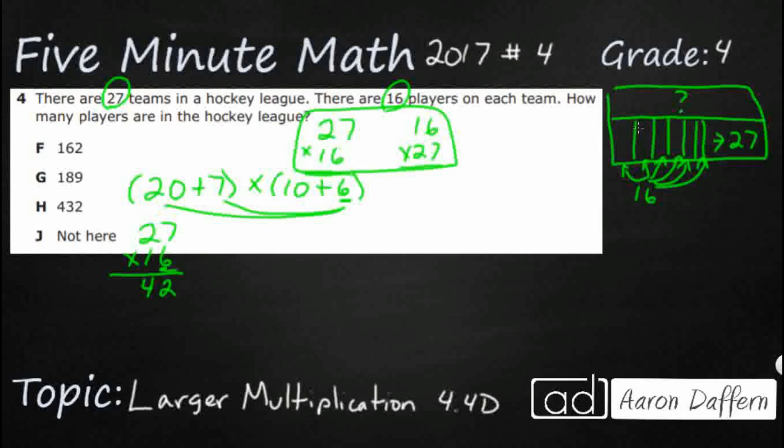Now, this 2 right here is actually a 20 because it's sitting in the 10s place. So it's 6 times 20. So let's see. I've got 20 times 6. You multiply the non-zeros. That's 12. Add that 0. You've got 120. So 6 times 27 is really 6 times 7 plus 6 times 20. And that's that 42 and 120.